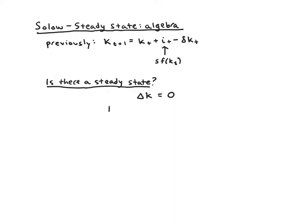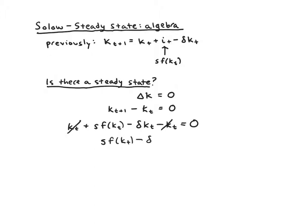Δk by definition is k(t+1), next period's capital, minus this period's capital k_t. We can use our law of motion to substitute in for k(t+1): that gives us k_t plus s·f(k_t) minus delta·k_t minus k_t, all equal to zero. We notice we have k_t plus some stuff minus k_t, so those k_t terms cancel out.